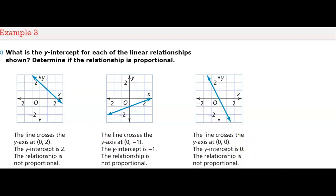It asked if the relationships are proportional. Because these two are not crossing through the origin, they are not proportional, but the last one is proportional. There's an error with this one. It should say that it is proportional. This should be proportional because it goes through the origin.